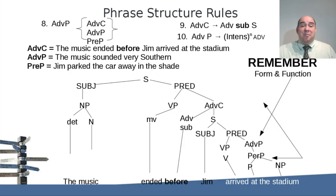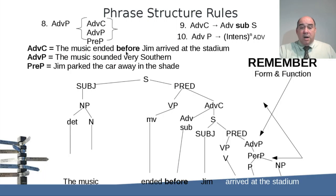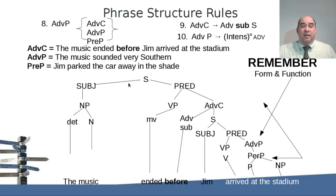Let's look at an adverb clause example: 'The music ended before Jim arrived at the stadium.' The main sentence is 'The music ended' — subject and verb. 'Before' is the marker for a dependent adverbial clause. Then we have another sentence: 'Jim arrived at the stadium' — subject, verb, and prepositional phrase.